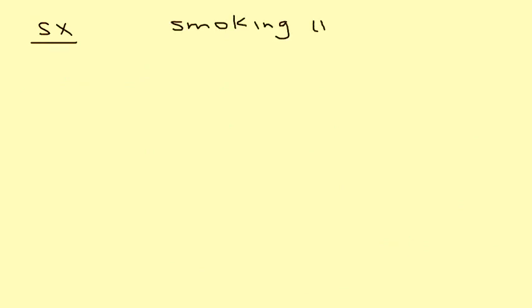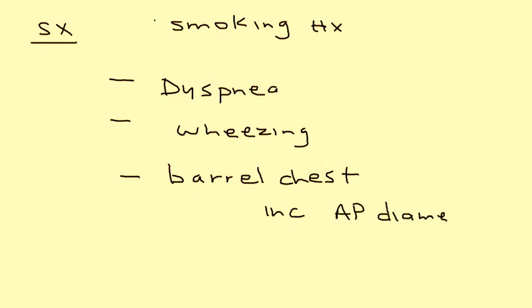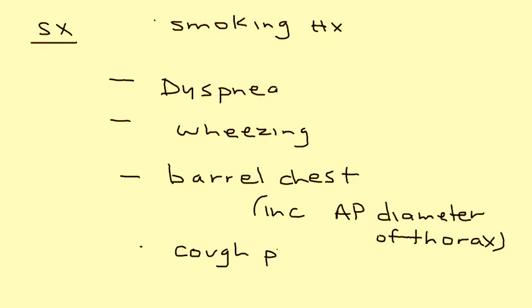Bacterial infection in acute exacerbations is treated with antibiotics, so keep these key pathophysiology aspects in mind. In terms of symptoms, a clinical vignette will almost always include a smoking history. Symptoms include difficulty breathing and wheezing. On physical exam, a barrel chest — an increased anterior-posterior diameter of the thorax — is found, along with a productive cough if there is a strong bronchitis component.